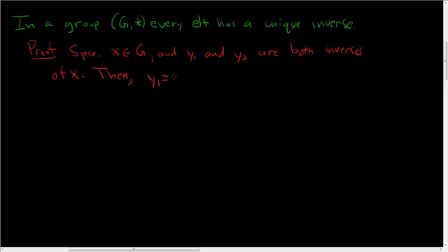So y1 is equal to y1 star. Now we somehow need to involve y2 and x, so I'm going to put e here. We can do that because e is the identity.